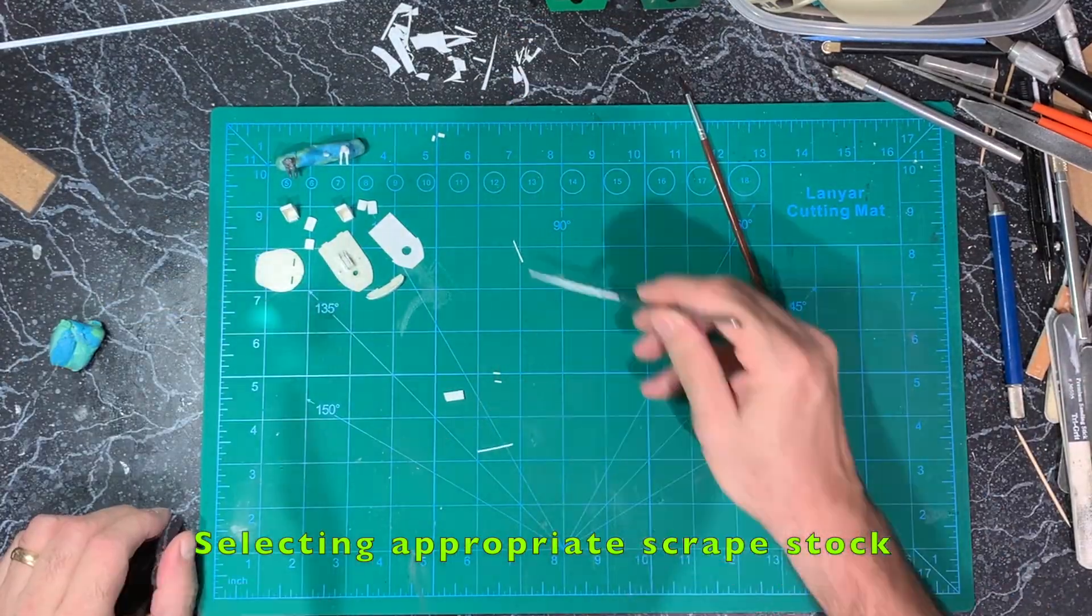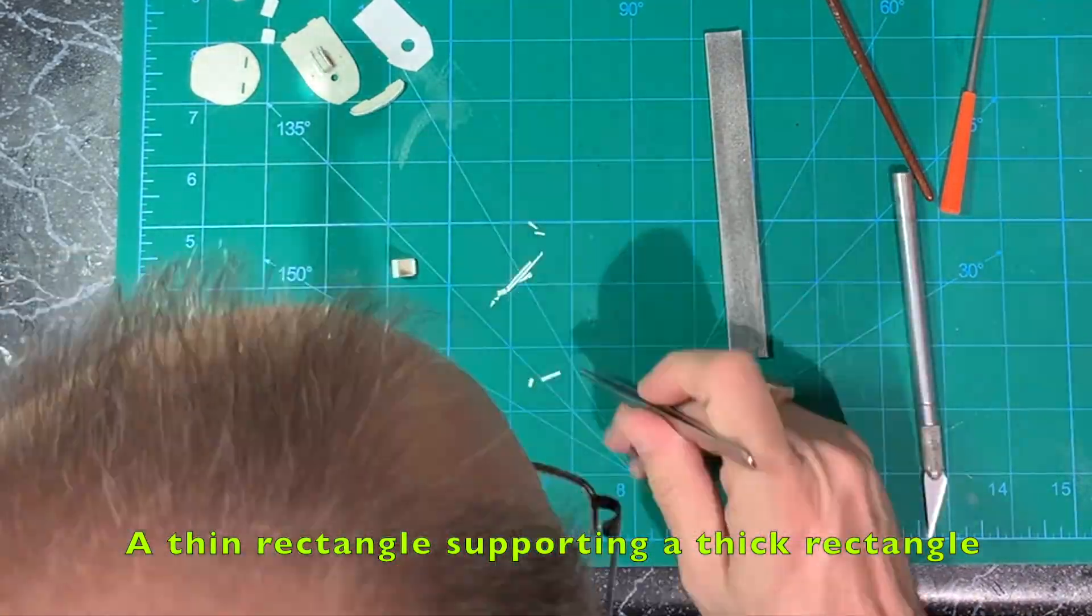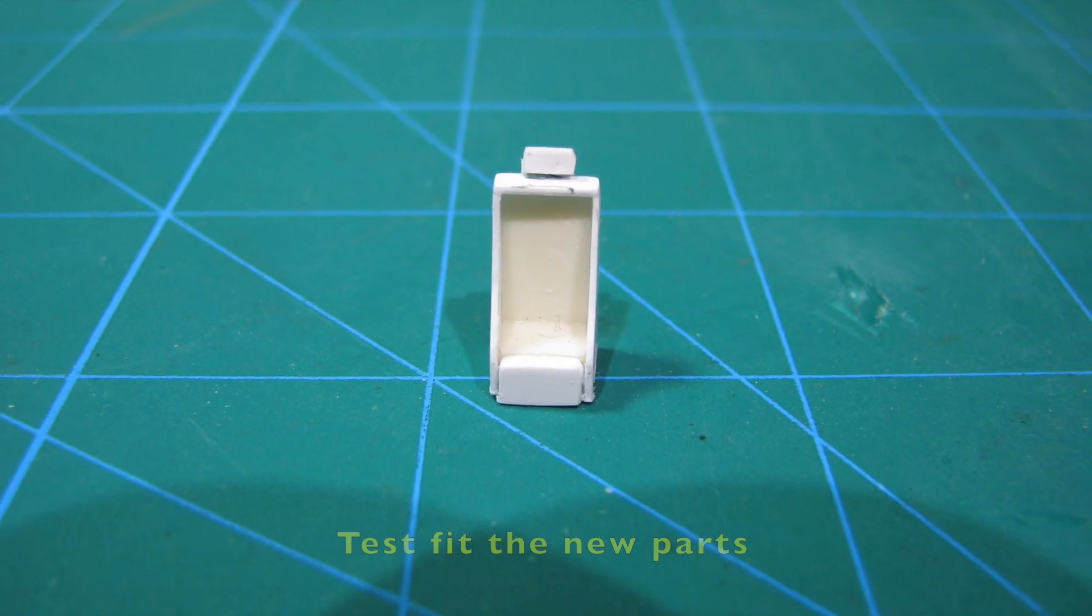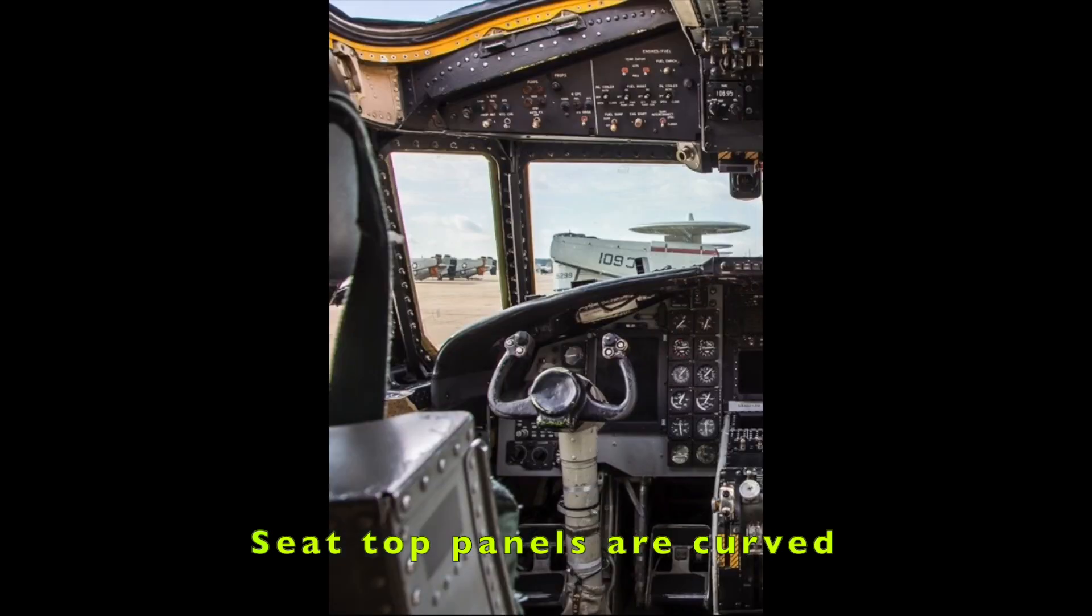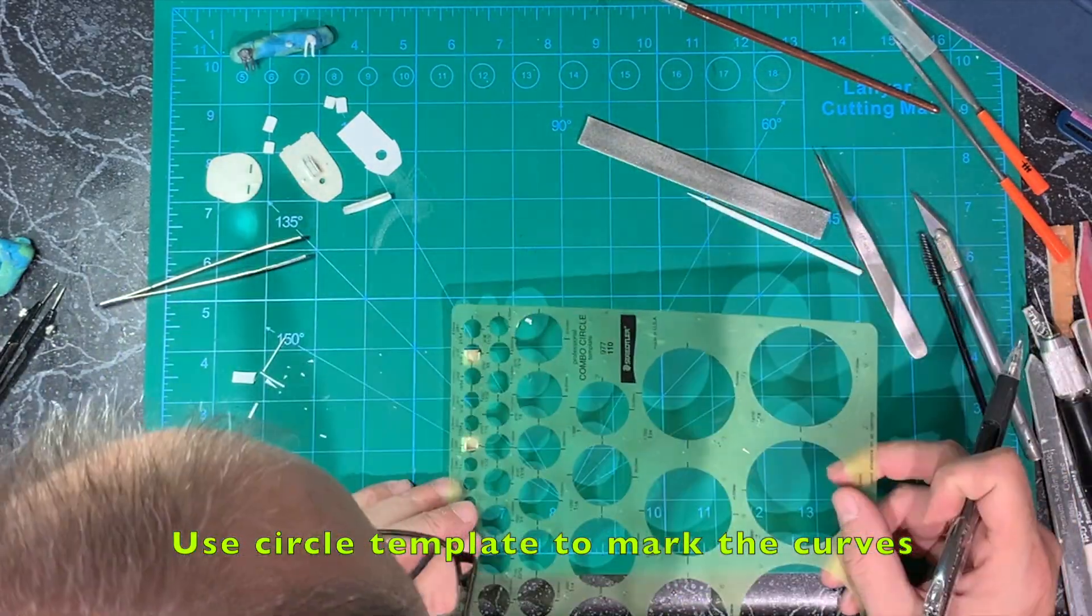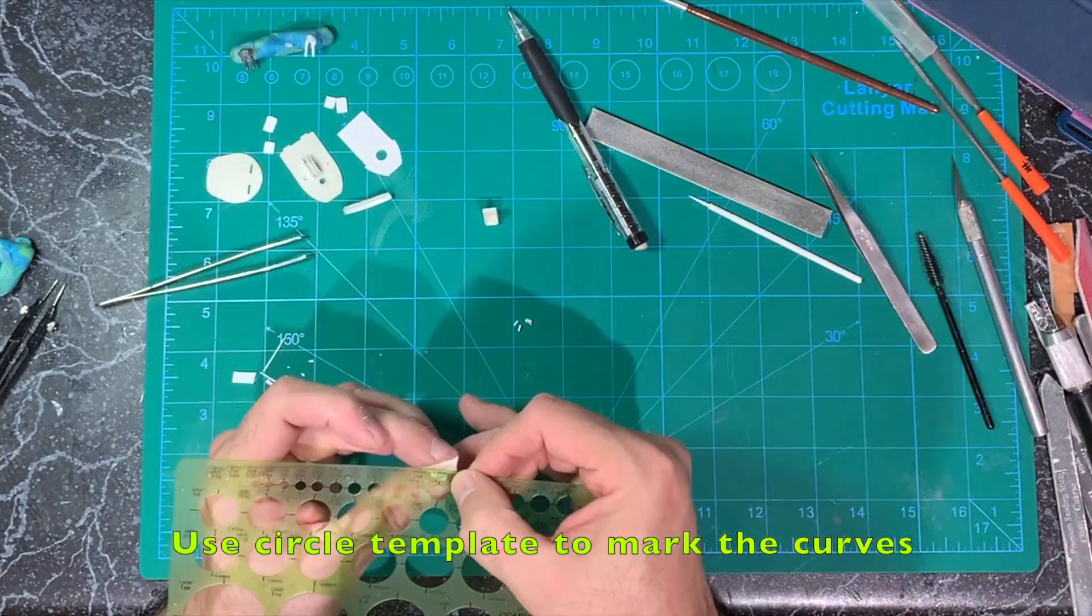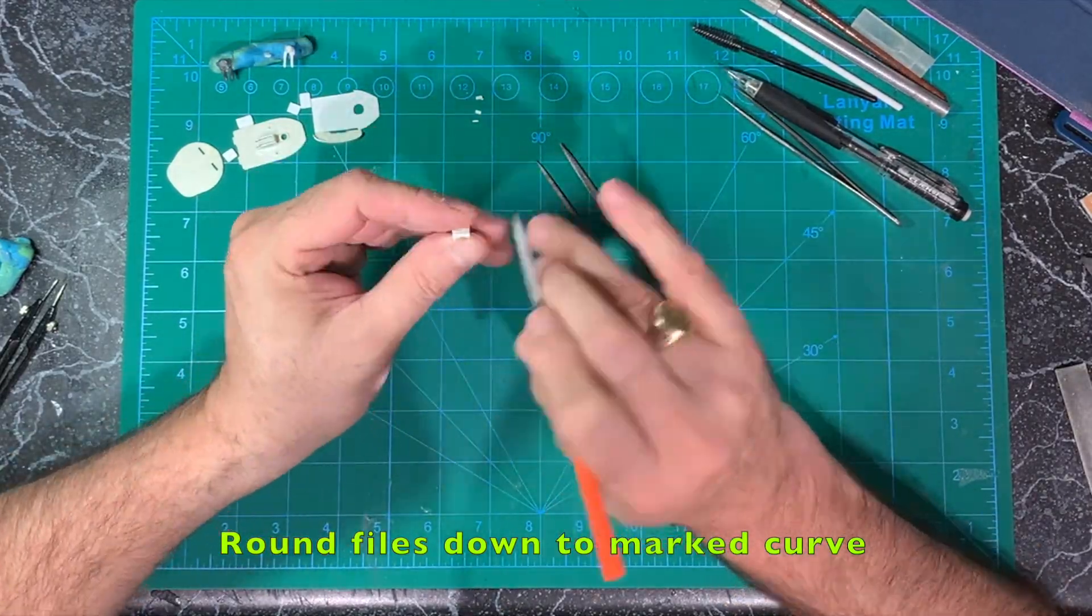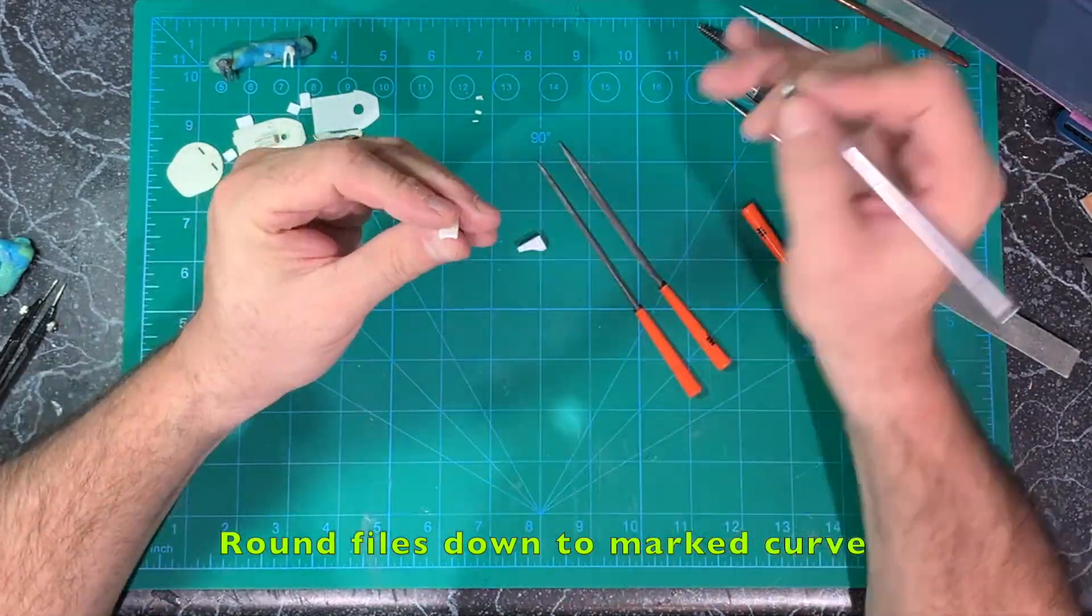Turning to the headrests, I explore and experiment with scraps of sheet styrene. I decide on as simple a solution as possible - a cushion of thick stock supported at an angle by a rectangle of thin stock. As I was consulting references for the headrests, I noticed that the top panels of the seats are curved below the headrests. Using my circle template, I test fit to find the right curve. Then I tape each seat below that circle and mark the correct curve on the seat top. Using my curved and or round files, I file each seat top down to the marked curve. Then I clean up the corrected areas with my number 11 blade and sanding sticks.